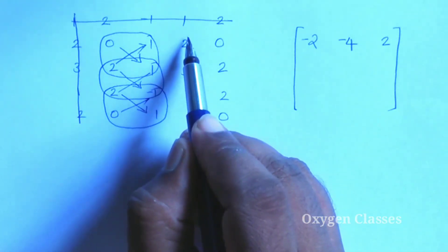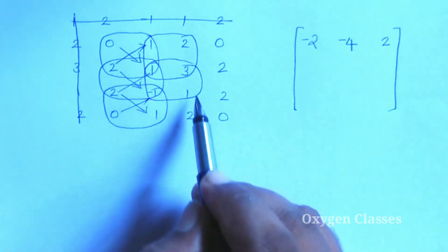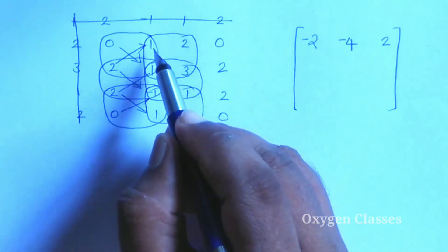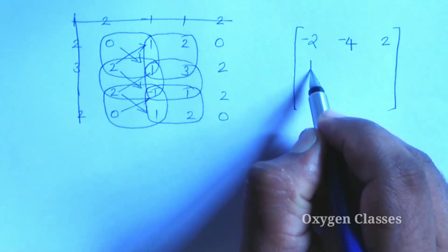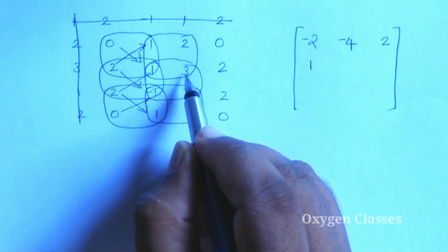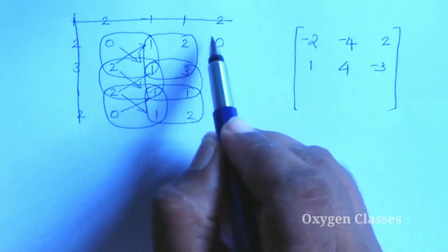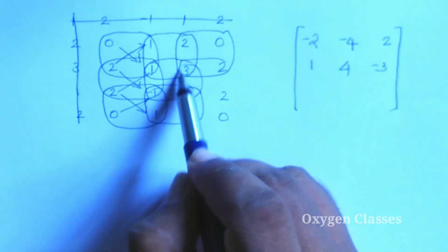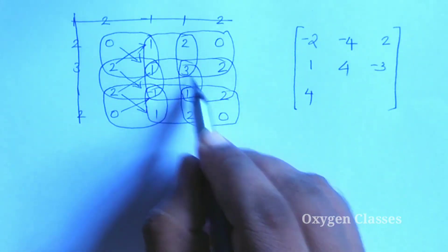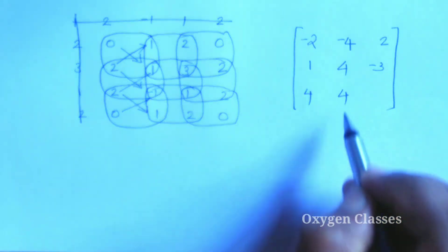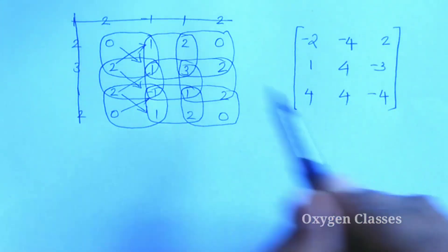Continuing the cofactor calculations: 1 minus 2 is minus 1. Then 1 minus minus 3 is 1 plus 3 equals 4. Then minus 2, minus 1, minus 3. Next set: 4 minus 0 is 4. Then 6 minus 2 is 4. Then 0 minus 4 gives minus 4.